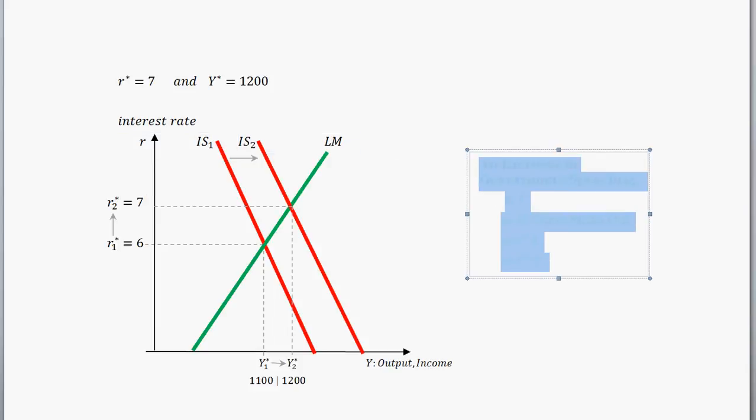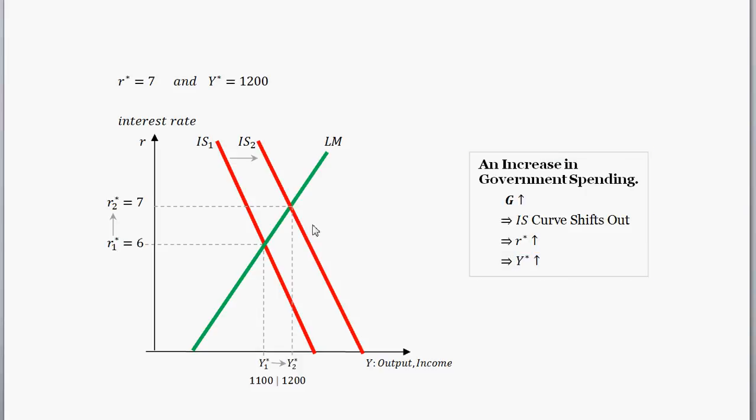So we can kind of summarize what we just had in this IS-LM model with an increase in government spending. So G goes up, shifts out the IS curve, which increases real interest rates, increases the equilibrium interest rate, and increases the equilibrium output level. Okay, so now how can we think about this, right? So we increase government spending, and we have a model to explain what happens to some key variables in the economy.